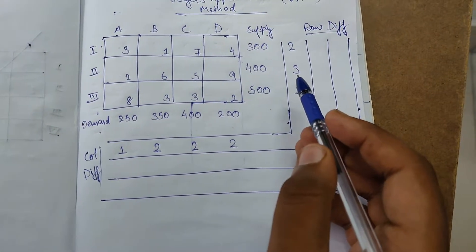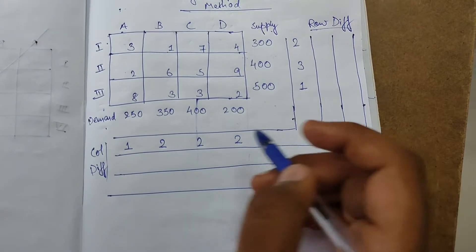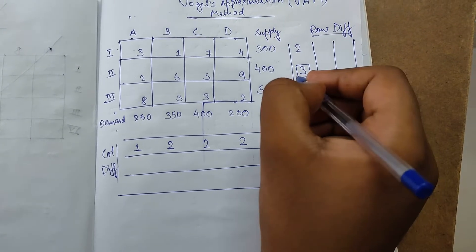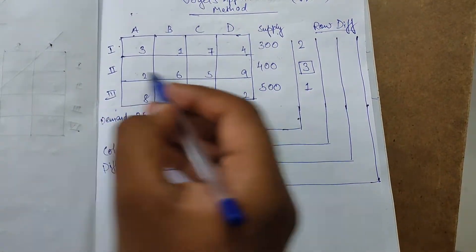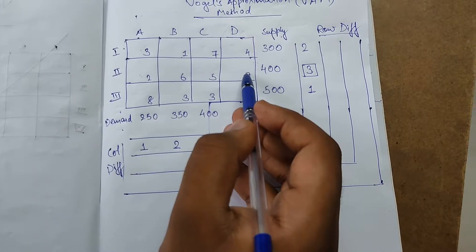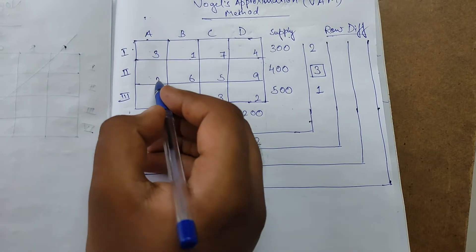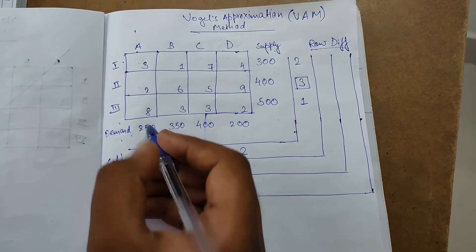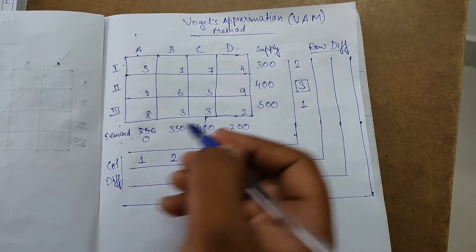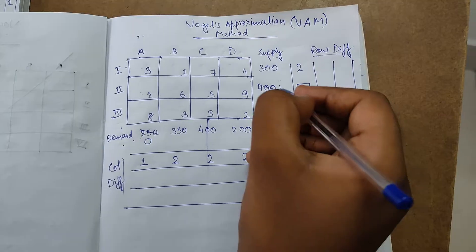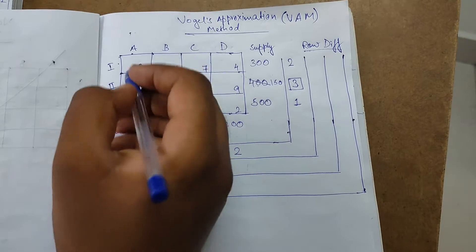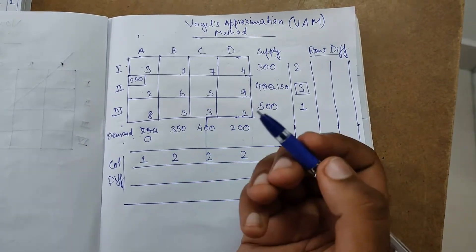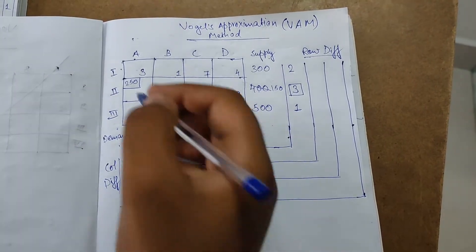In the first iteration, look for the maximum element among the row and column differences. The maximum is three — highlight it. In the corresponding row, look for the least element, which is two. The corresponding demand is 250 and supply is 400. Demand is less, so subtract 250: demand becomes 0 and supply becomes 150. Write 250 in the small box. Since the result is zero, strike off that column.